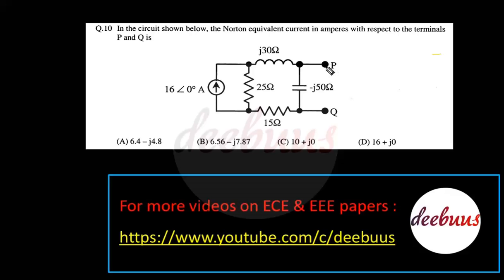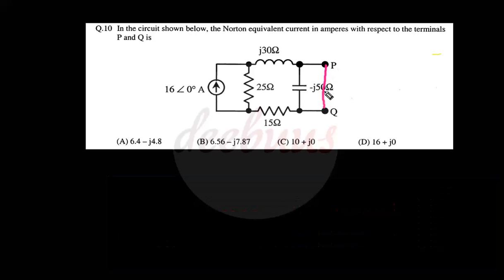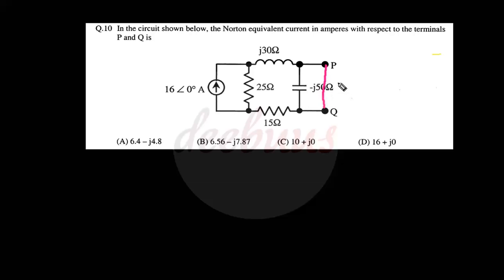For calculating Norton's current, we have to short-circuit the points P and Q. As we short-circuit the points P and Q, the capacitor does not have any effect in this circuit. So we can calculate Norton's current: I_norton equals the applied current, which is 16∠0°, that is 16. The current reaches this point and splits into this branch and similarly into this branch.